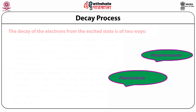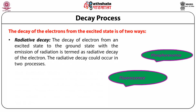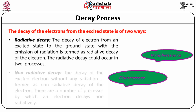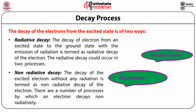Decay processes: the decay of electrons from the excited state occurs in two ways. Radiative decay is the decay of an electron from an excited state to the ground state with emission of radiation. The radiative decay could occur in two processes: fluorescence and phosphorescence. In non-radiative decay, the excited electron decays without any radiation. There are a number of processes by which an electron decays non-radiatively.